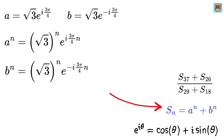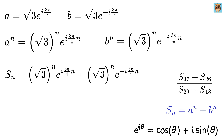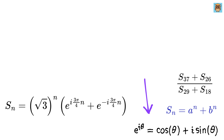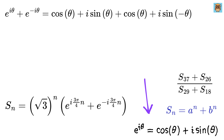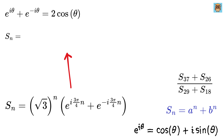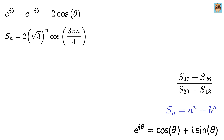Now comes the sweet part. Adding a raised to n and b raised to n, we take root 3 raised to n as common, and we get root 3 raised to n times (e raised to i theta plus e raised to minus i theta). Using Euler's formula, e raised to i theta plus e raised to minus i theta equals 2 times cos theta, because the sine theta terms cancel out. So this addition becomes 2 times root 3 to the power n times cos of 3n pi by 4. This way, we have a beautiful compact formula for s_n.